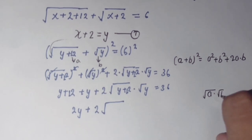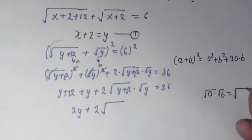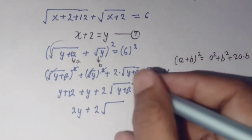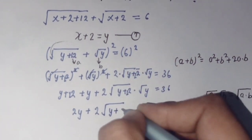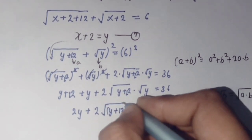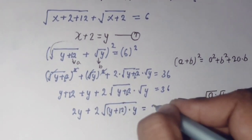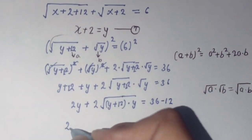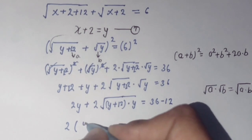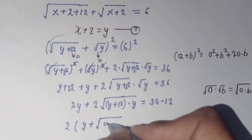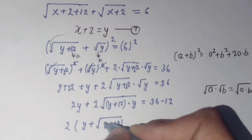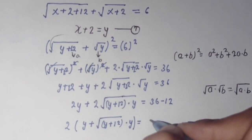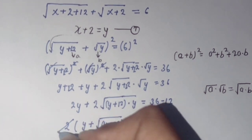We use the formula: square root of a times square root of b equals square root of (a·b). So the equation becomes: 2·square root of (y(y + 12)) = 36 minus 12, which is 24. Dividing both sides by 2: square root of (y(y + 12)) = 12.